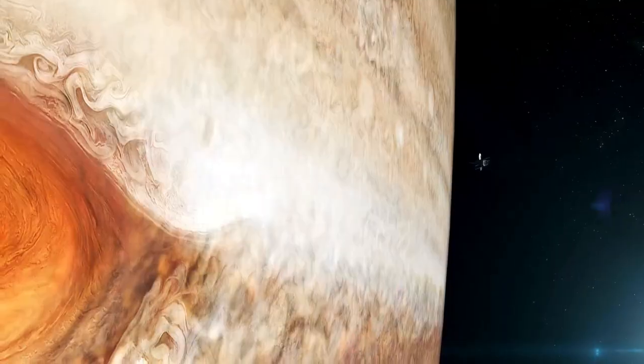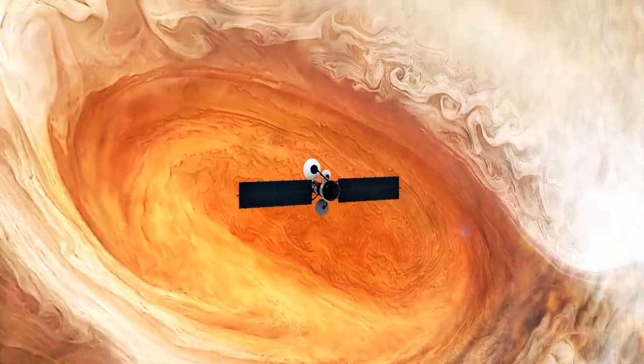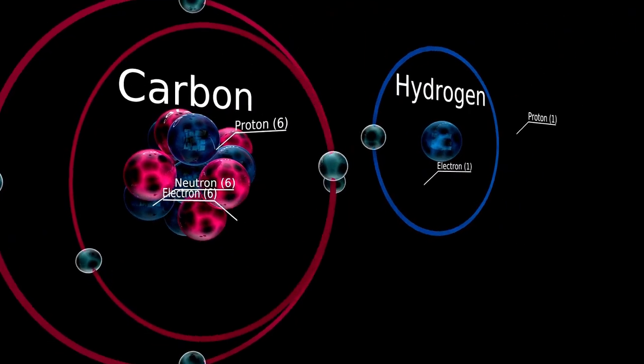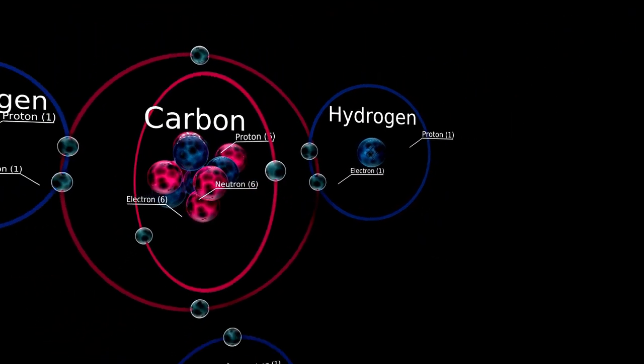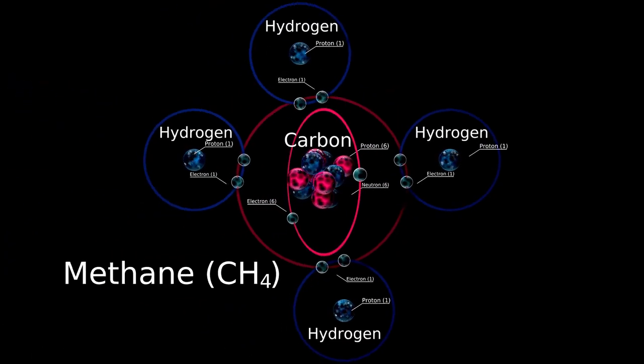NASA tweeted an image from the New Horizons flyby, noting that it displayed Pluto's true colors, including the glacier-like heart. The planet spans just over 1,400 kilometers across, about half the width of the United States, and two-thirds the width of Earth's moon.